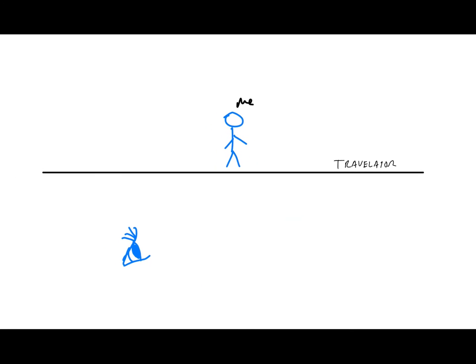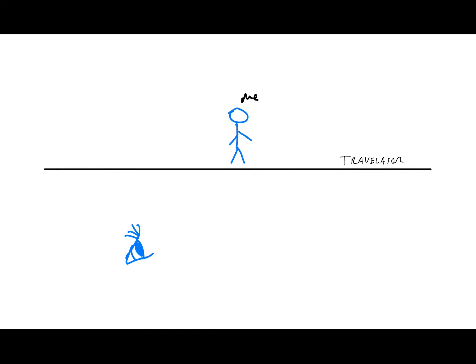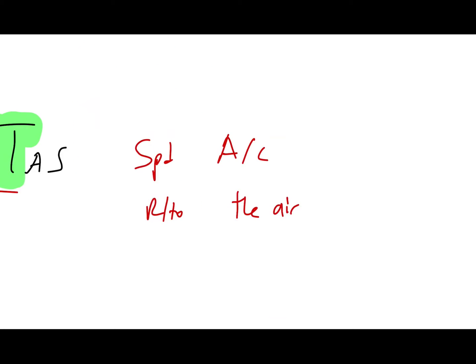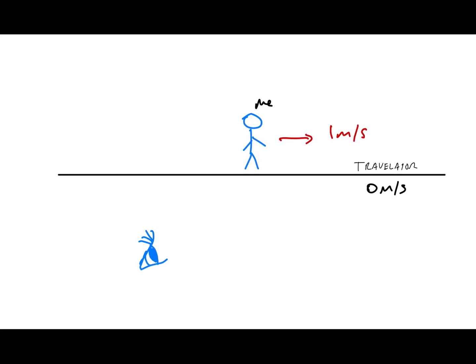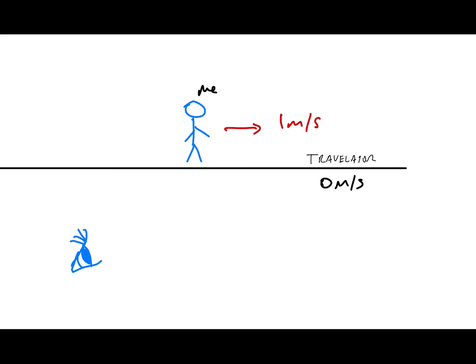One example: imagine a travelator — basically a flat escalator going in one direction. Let's say the travelator is stationary, at zero meters per second. I'm walking on the travelator to the right at one meter per second. Since true airspeed is defined as the speed of the aircraft relative to the air, that's basically the speed I'm walking relative to the stationary travelator — one meter per second. Therefore, my true airspeed is one meter per second.